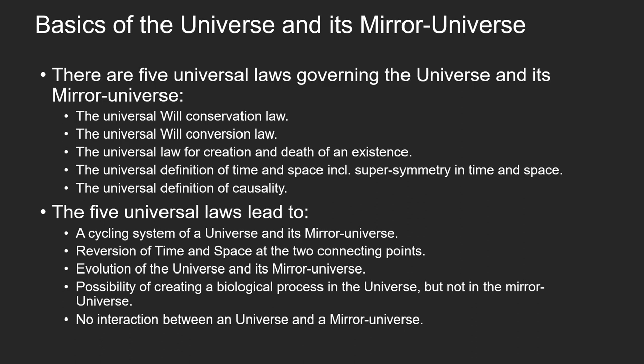The five universal laws led to: a cycling system consisting of a universe and its mirror universe; the reversion of time and space at the two connecting points of the universe and its mirror universe; the creation, evolution, and death of the universe and its mirror universe; the possibility for creating biological processes in the universe but not in its mirror universe. In addition, there is no interaction between a universe and a mirror universe, except at the two connecting points.